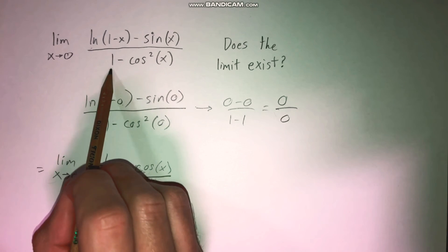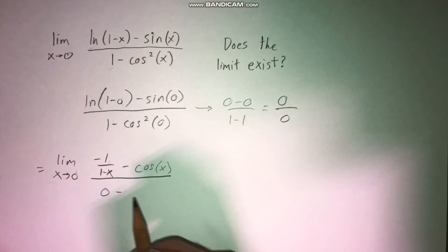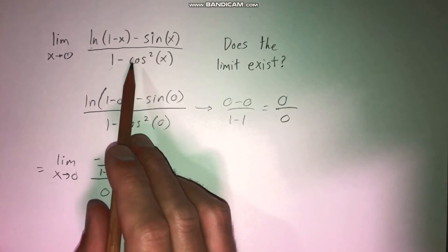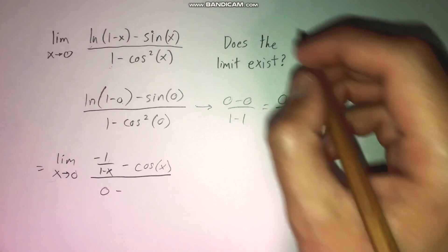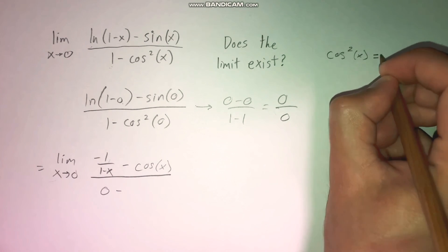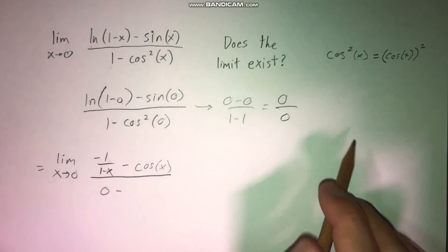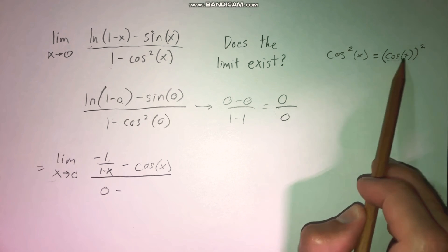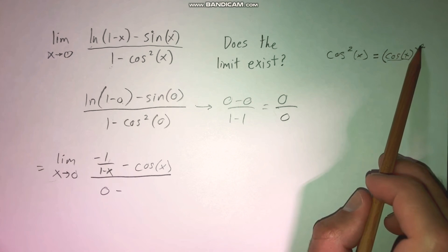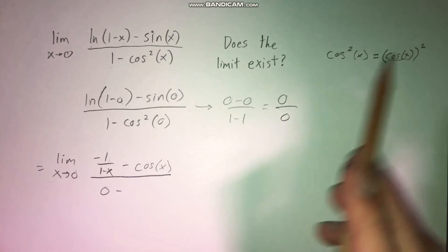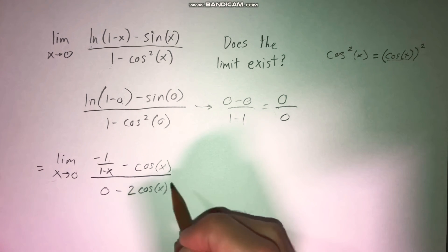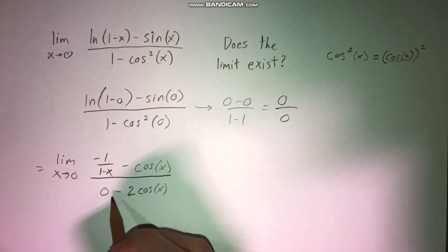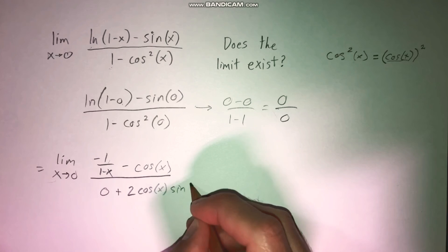On our denominator, the derivative of one is zero. For the derivative of cosine squared of x, we again use the chain rule. Think of cosine squared of x as cosine of x, all squared. The outside piece is the squared, and the inside is cosine x. Taking the derivative of the outside and leaving the inside alone, we bring the two down in front using the power rule. Then we multiply by the derivative of the inside: the derivative of cosine x is negative sine x. So we end up with positive two times cosine x times sine x.